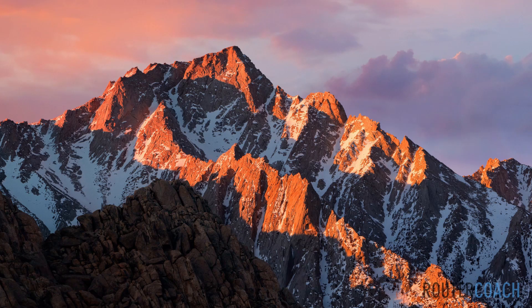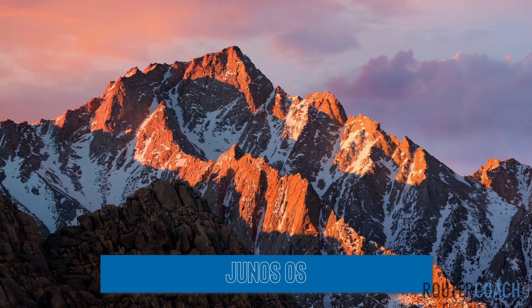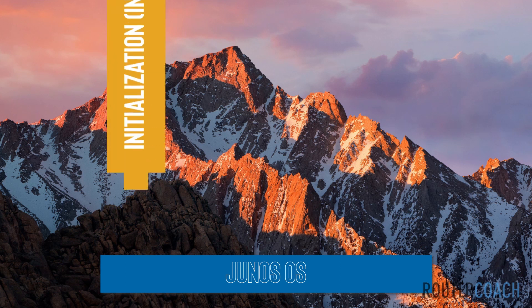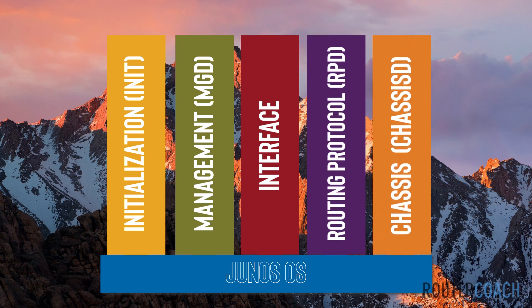Let's jump straight in. We're going to be looking at the JNCIA Junos and Junos OS, which is the Juniper operating system. It runs on all Juniper network devices including both routers and switches. The Junos operating system itself is separated into multiple software processes where each process runs in its own protected memory space, and each process handles a different part of the device's functionality.